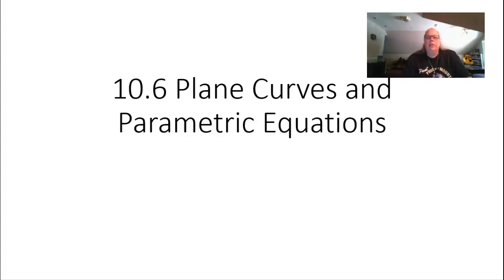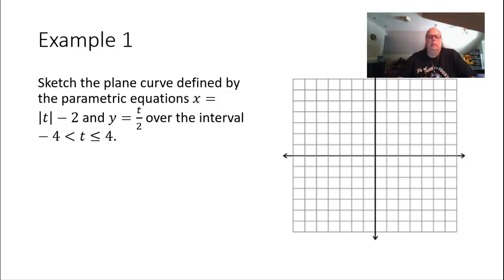The examples in this video go with Section 10.6, Plane Curves and Parametric Equations. Example 1: sketch the plane curve defined by the parametric equations x is equal to the absolute value of t minus 2, and y is equal to t divided by 2, over the interval negative 4 less than t less than or equal to positive 4.